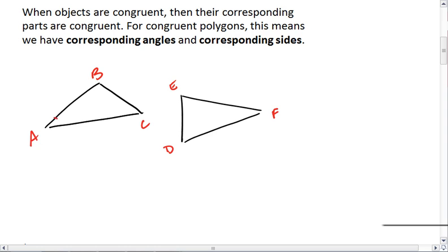Here, I'm going to tell you that angle A is congruent to angle F, angle B is congruent to angle E, and angle C is congruent to angle D.